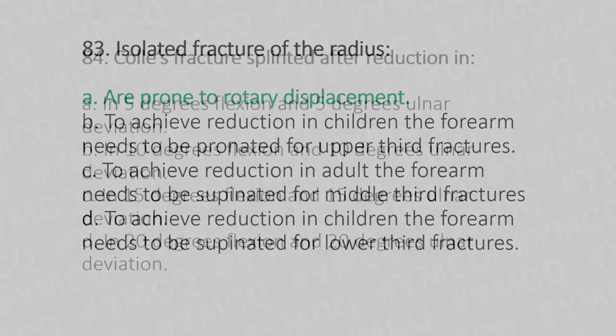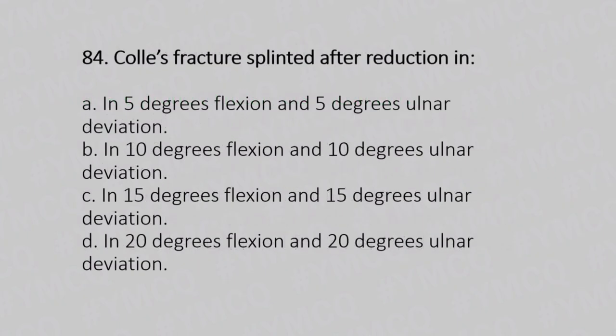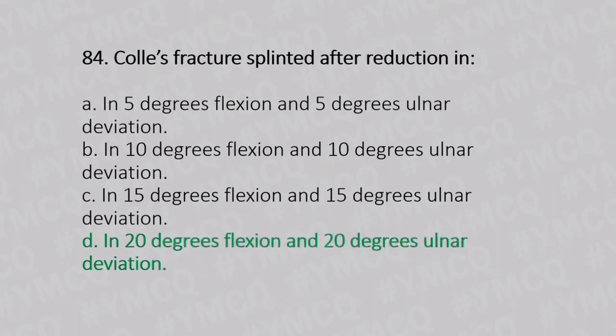Now let's move to question number 84. Colles' fractures splinted after reduction in. Option A: 5 degrees flexion and 5 degrees ulnar deviation. Option B: 10 degrees flexion and 10 degrees ulnar deviation. Option C: 15 degrees flexion and 15 degrees ulnar deviation. Option D: 20 degrees flexion and 20 degrees ulnar deviation. And the answer is Option D, 20 degrees flexion and 20 degrees ulnar deviation.